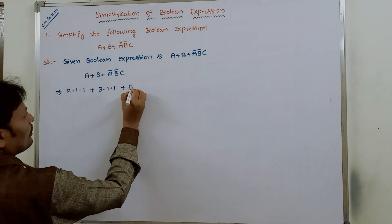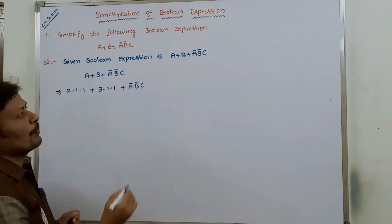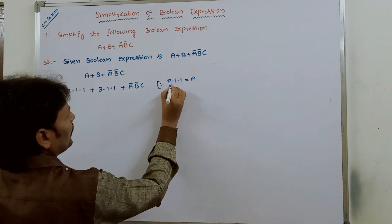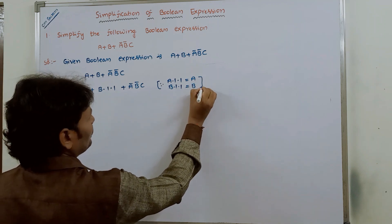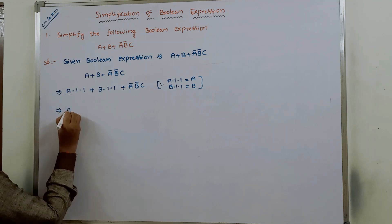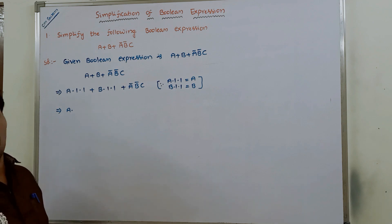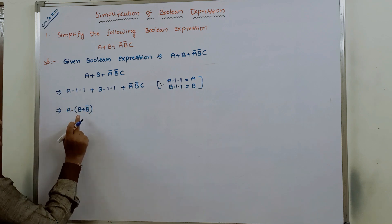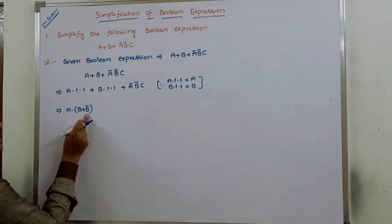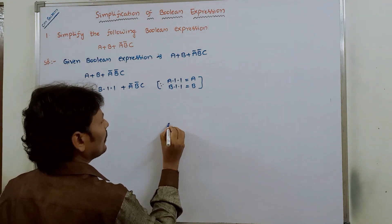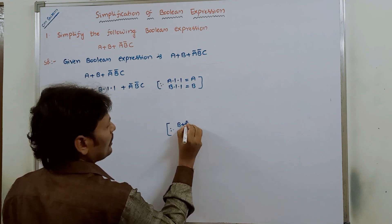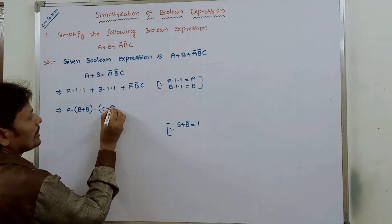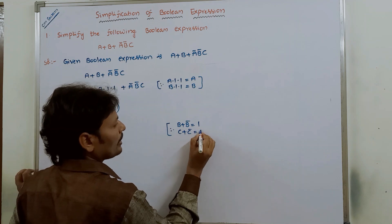For the first term a, the missing variable b can be replaced with (b + b̄), and the missing variable c can be replaced with (c + c̄). We already know that b + b̄ = 1 and c + c̄ = 1, so a·(b + b̄)·(c + c̄) = a·1·1 = a.